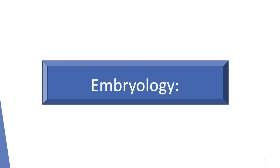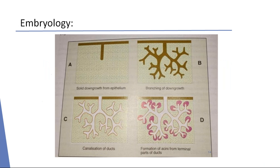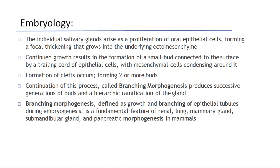Coming to embryology. Initially there will be a solid downgrowth from the epithelium, from which there will be multiple branchings. These branchings will be canalized — canalization of the ducts will be present. Next, there will be formation of acini from the terminal parts of the ducts. The individual salivary glands arise as a proliferation of oral epithelial cells forming a focal thickening that grows into the underlying ectomesenchyme. Continued growth results in the formation of a small bud connected to the surface by a trailing cord of epithelial cells with mesenchymal cells condensing around it. Formation of clefts occurs, forming two or more buds.